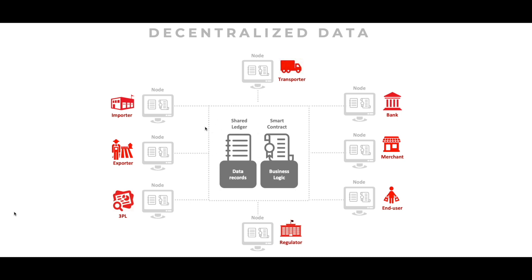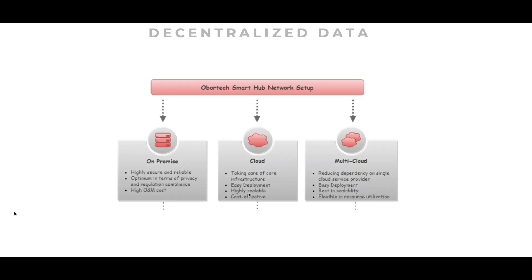The ledger is based on consensus among all nodes in the network. That means participating organizations can't delete or change the registered data without notifying others. The Smart Hub offers different participation solutions for users having various cost and privacy preferences.